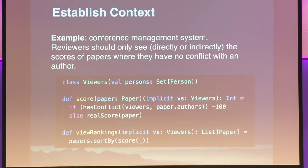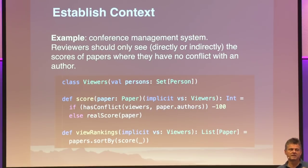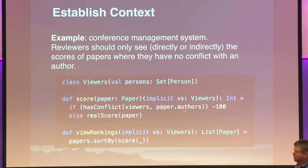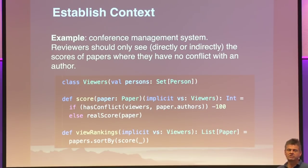Another thing that implicits can do is establish contexts. Here I give you a simple example — a conference management system. Let's say you have submitted your talk abstracts and there are reviewers. There's a rule that the reviewers shouldn't see their own reviews — because then maybe your co-reviewer says this is a pretty crappy proposal and you're angry at them. So, the rule is a reviewer should not see reviews for their own paper. We model that with a scoring function: if the viewers have a conflict with the authors of the paper, then we blacken out the score and give minus 100, otherwise we give the real score.